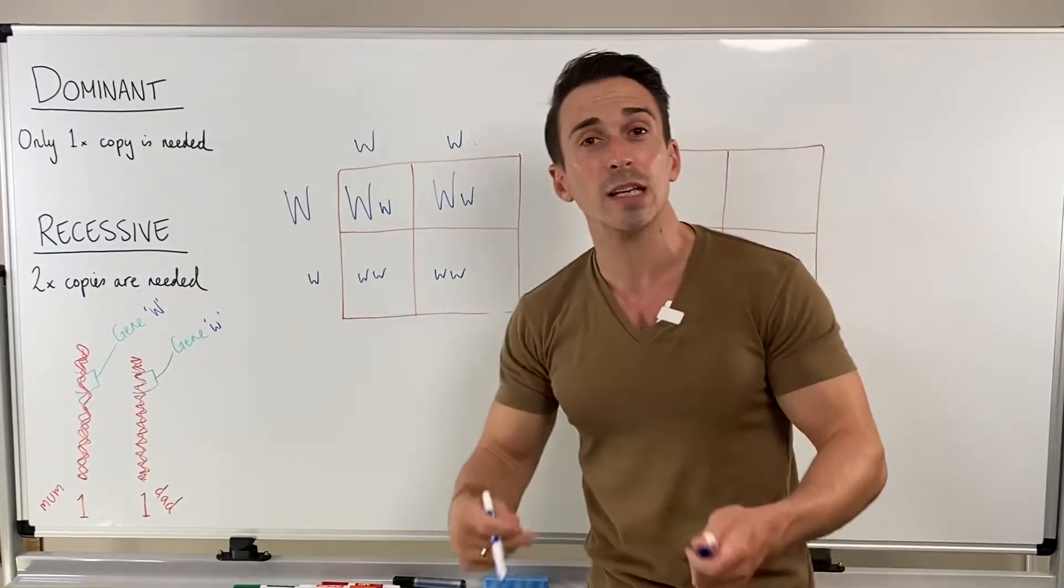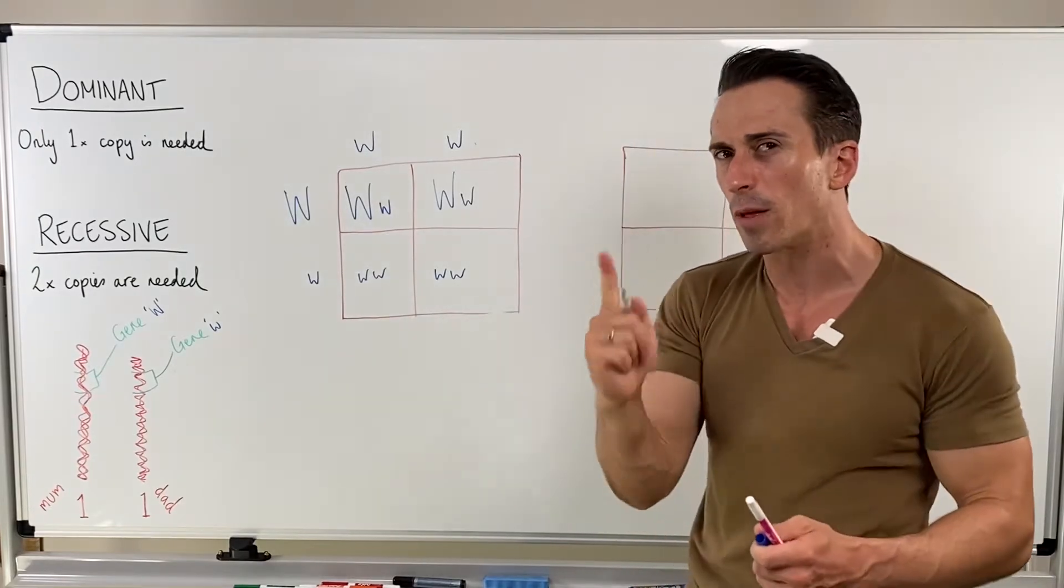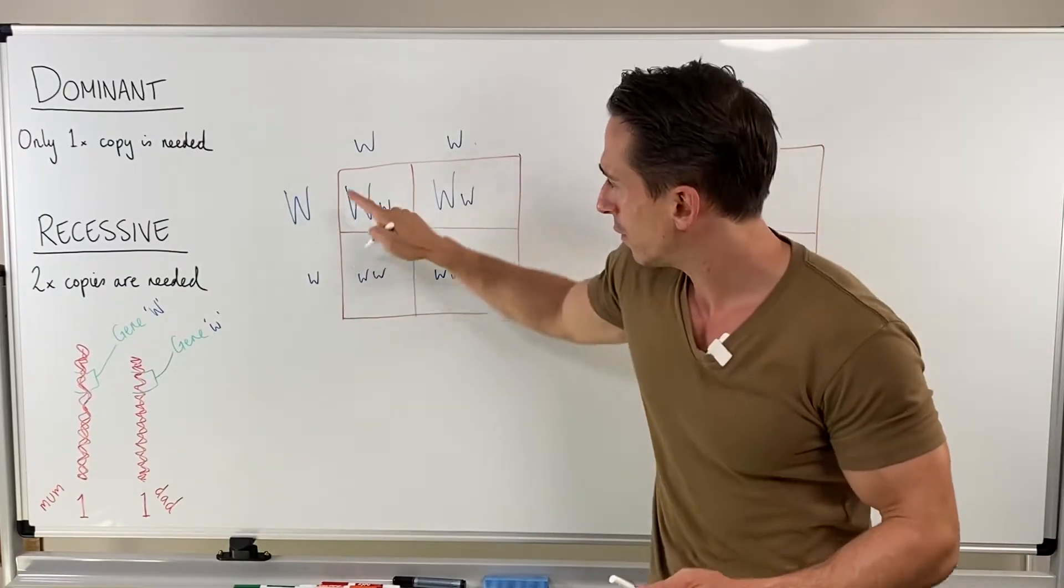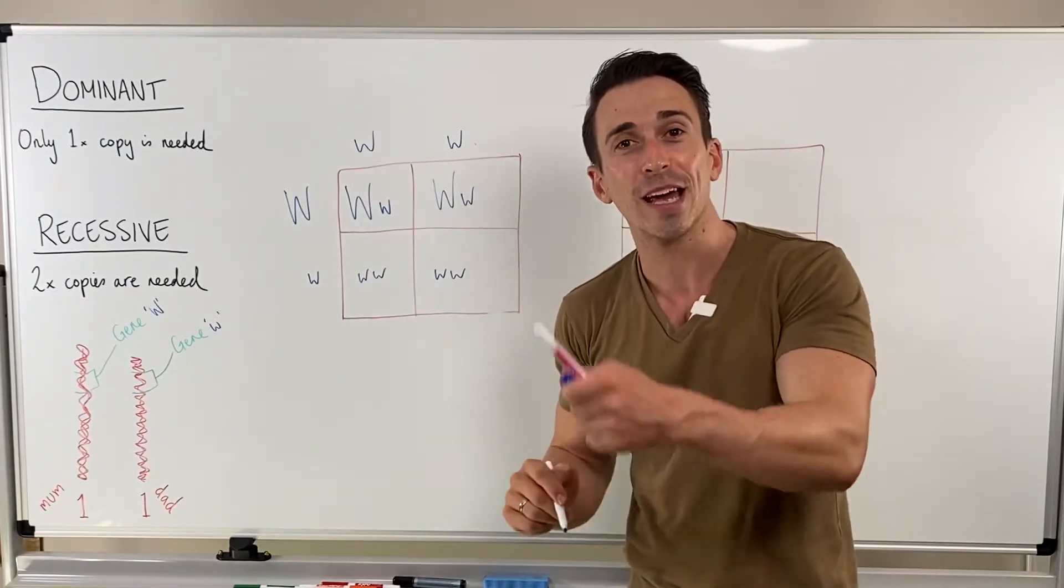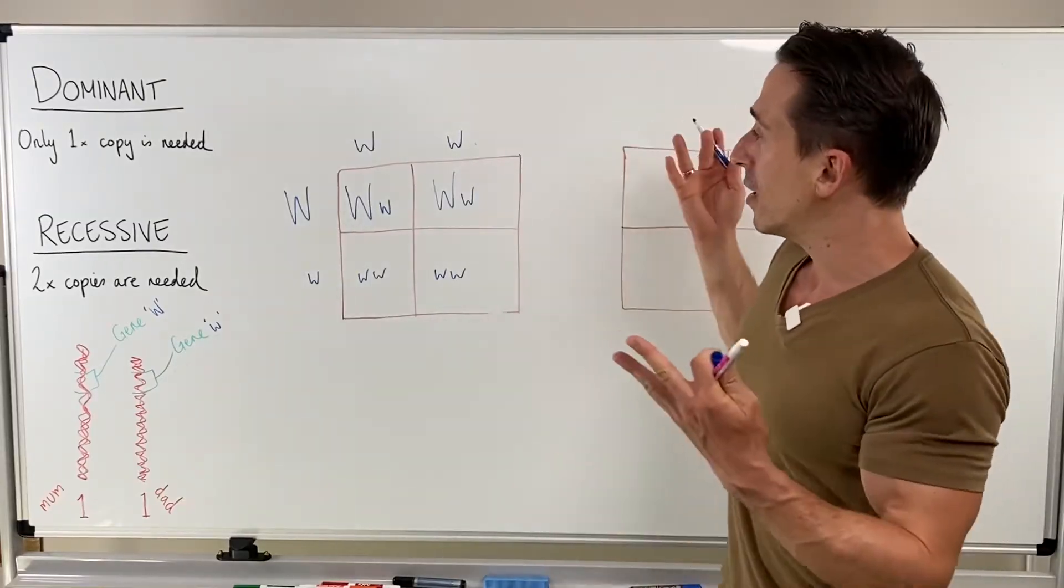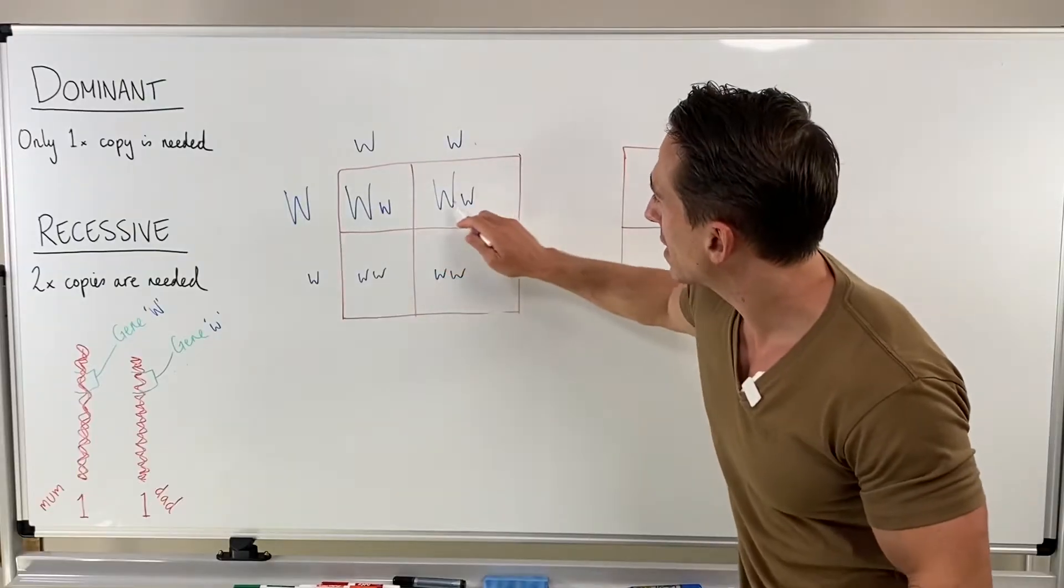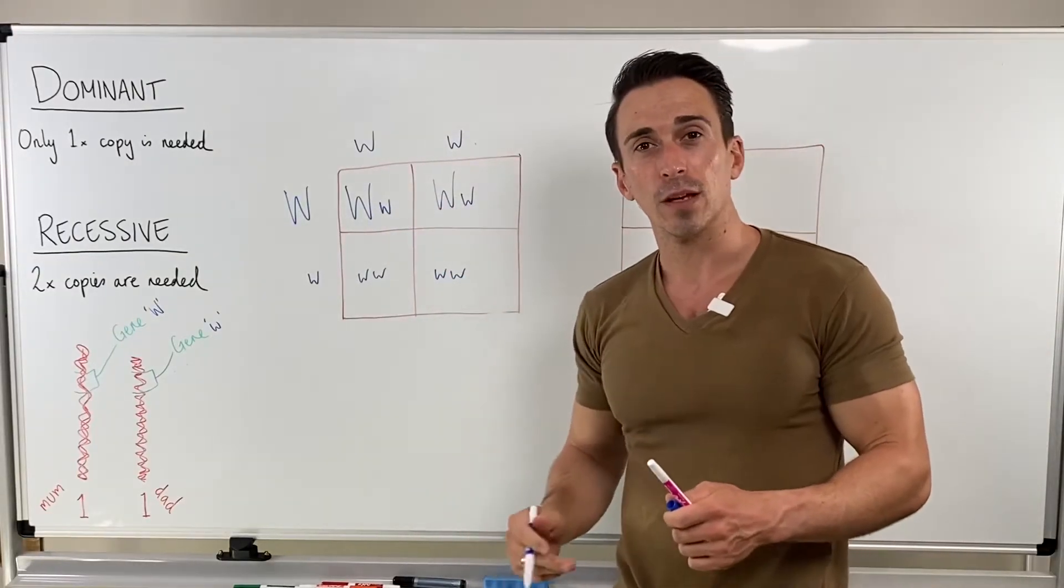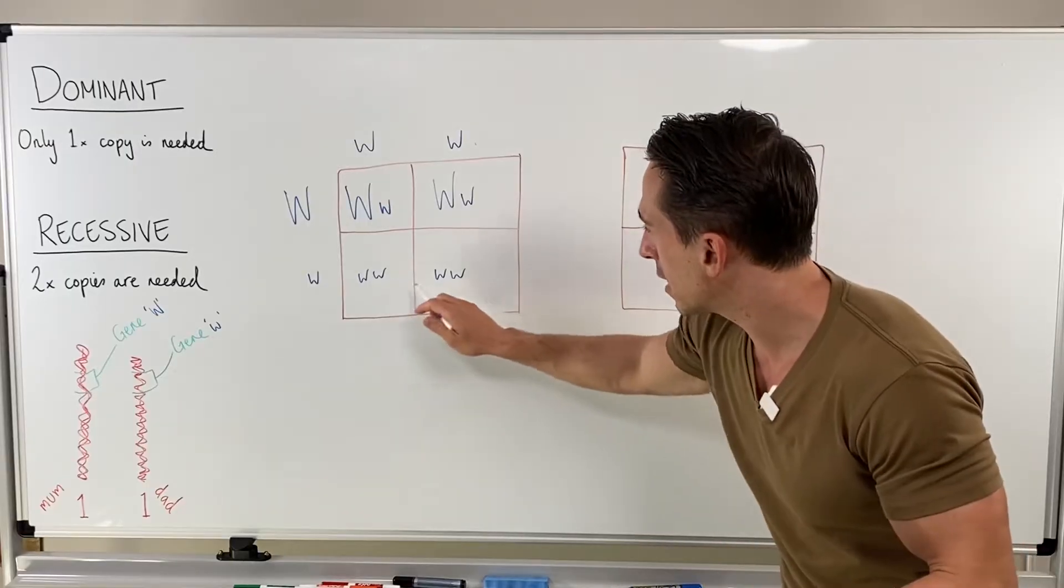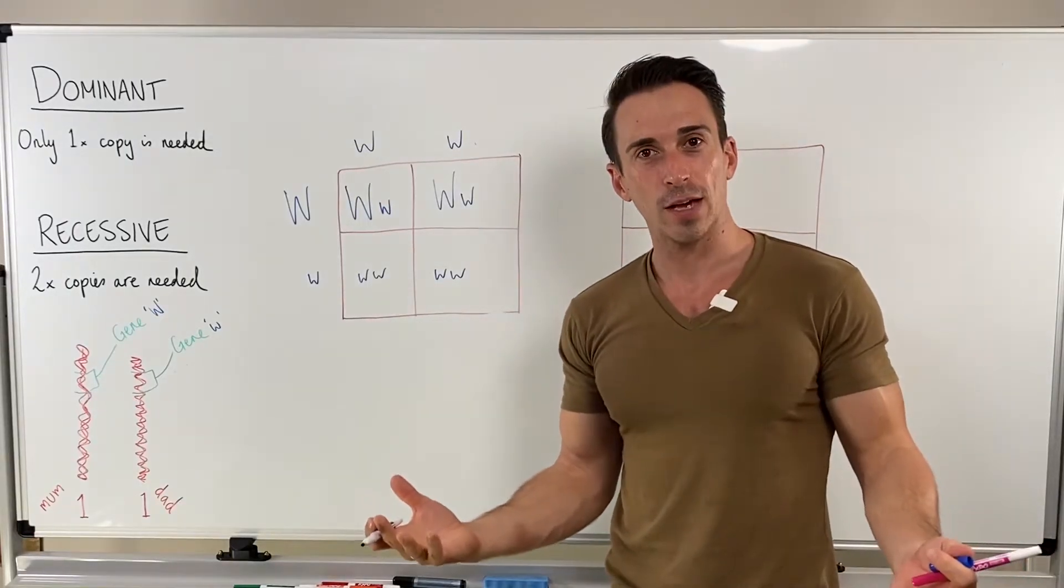And I told you that widow's peak is dominantly inherited. You only need one copy of the big version here, big gene, in order to get or manifest the widow's peak. What's the possible combination or percentage? Well, 50% of our offspring, statistically, will have a widow's peak. 50% will not, okay?